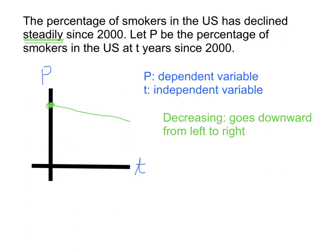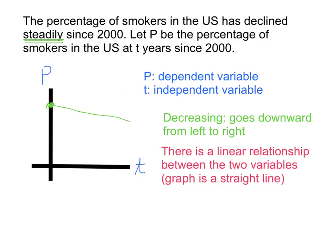Now this is an example of a decreasing curve because it goes downward from left to right. Also, we can say that there is a linear relationship between the two variables because the graph is a straight line. Now what about intercepts? Does this curve have any intercepts? Well, we know it has a P-intercept because there's a point where the curve crosses the P-axis. What about a t-intercept? Do you think this line would ever cross the t-axis? If you think about that, that would mean at that particular point in time, the percentage of smokers would be 0%. I know that hasn't happened yet, so we'll assume that there's no t-intercept.